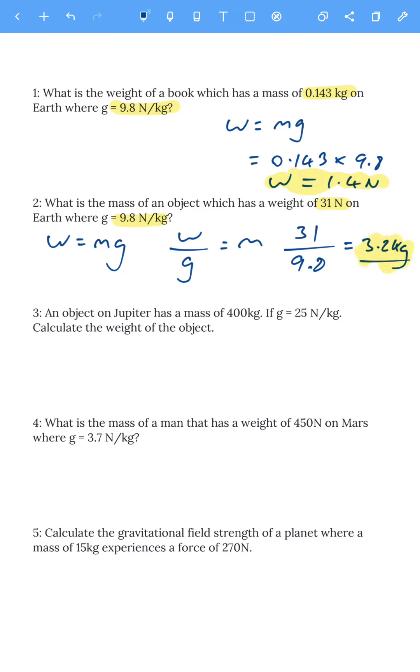Really straightforward. Next one. We've got an object on Jupiter with a mass of 400 kilograms, and Jupiter's gravitational field strength is 25 newtons per kilogram. Calculate the weight of the object. Weight is mass times gravitational field strength, so 400 kilograms multiplied by 25 gives us 10,000 newtons, or 10 kilonewtons.